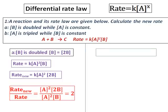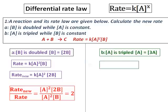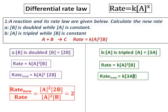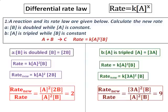Let's handle part (b). This is the case in which concentration of A is tripled. Note that the reaction is order 2 with respect to A. Write the old rate, then the new rate is k[3A]²[B]. The key point is that 3A is within the bracket and the exponent 2 applies to the 3 also. When you calculate this, the answer comes as 9. Hence, the new rate is 9 times the old rate.